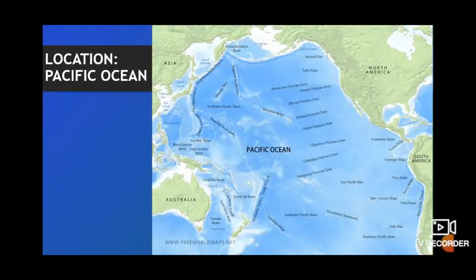The Pacific Ocean is surrounded by North America on the northeast, South America on the southeast, Asia to the northwest, and Australia on the southwest. The Pacific Ocean stretches from the shores of Antarctica to the Bering Strait through 135 degrees of latitude, which is around 15,500 kilometers. Its greatest longitudinal extent measures around 19,000 kilometers, along 5 degrees north between the coast of Colombia in South America and the Malay Peninsula in Asia.